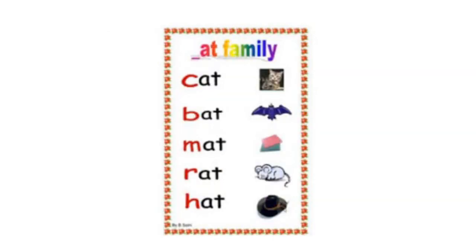Now let's try to read these words together. Try not to look at the pictures and look at the word as you read. First one: C, at, cat. Second one: B, at, bat. Third one: M, at, mat.